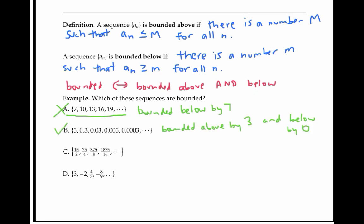Please pause the video and try to decide if the next two sequences are bounded. Sequence C is bounded below by 15 halves, but it's not bounded above. We can get from each term to the next by multiplying by five halves. Since five halves is bigger than two, the terms more than double from one term to the next, and so they increase without bound.